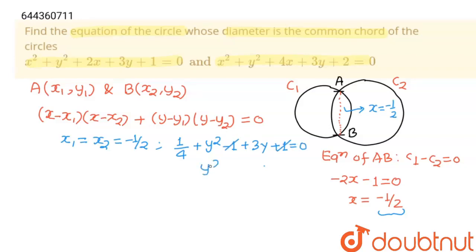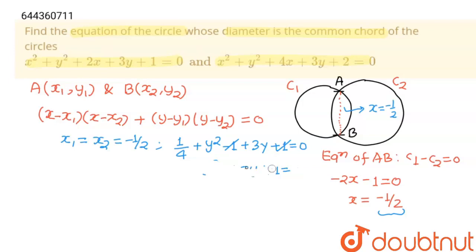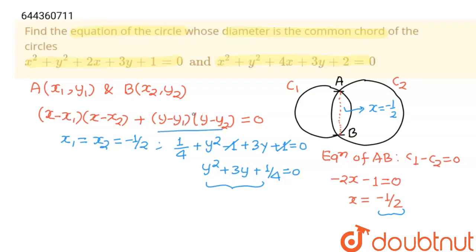After simplification, the terms cancel and we get y² + 3y + 1/4 = 0. Now y1 and y2 are the roots of this quadratic. This means the quadratic can be written as (y - y1)(y - y2), which is exactly the form we need for the equation of the circle.